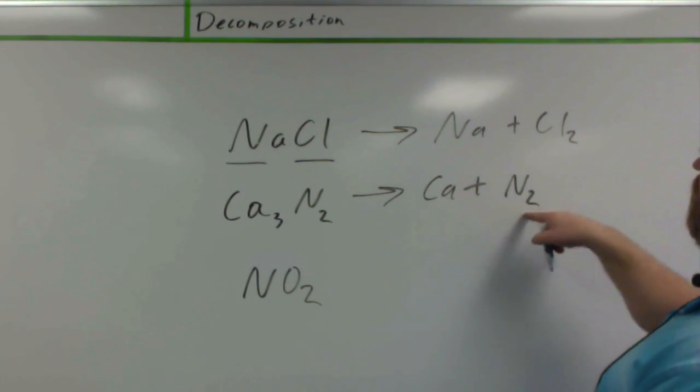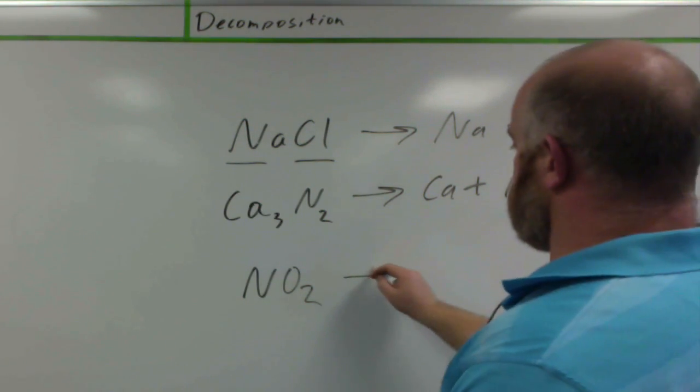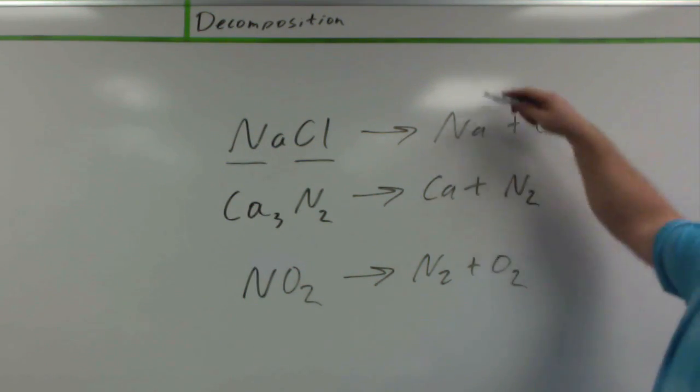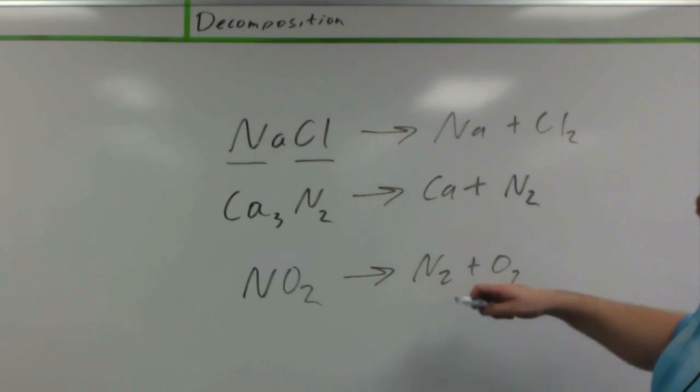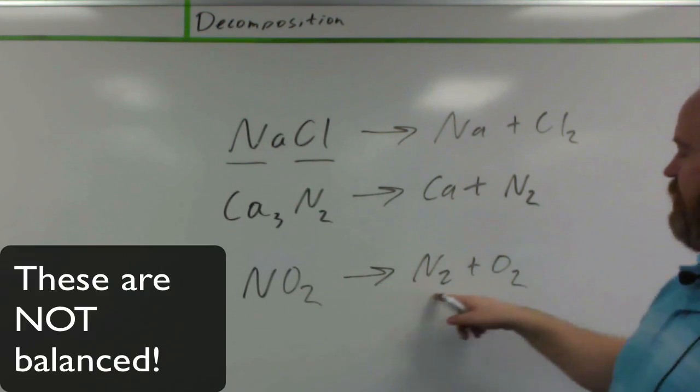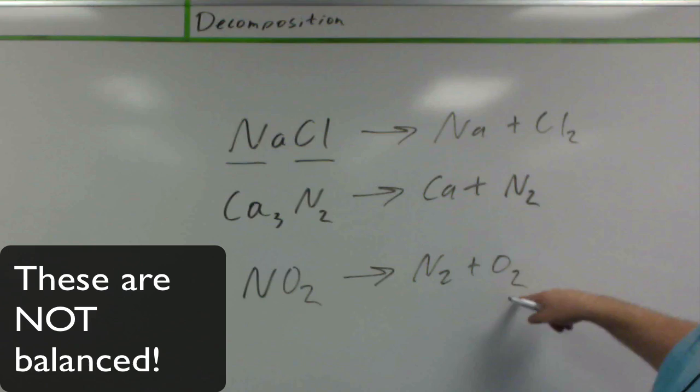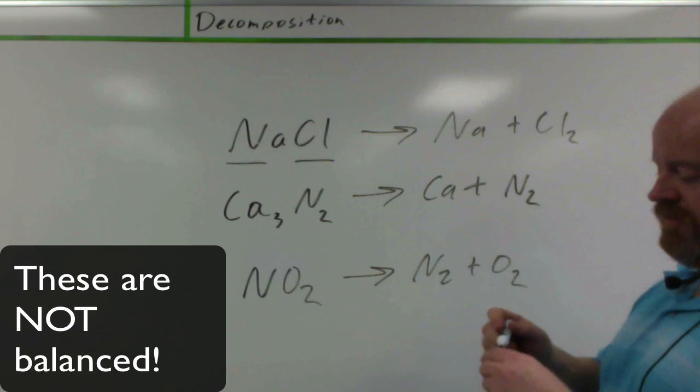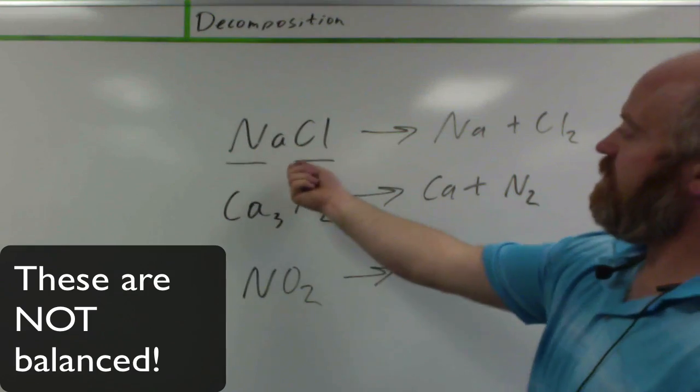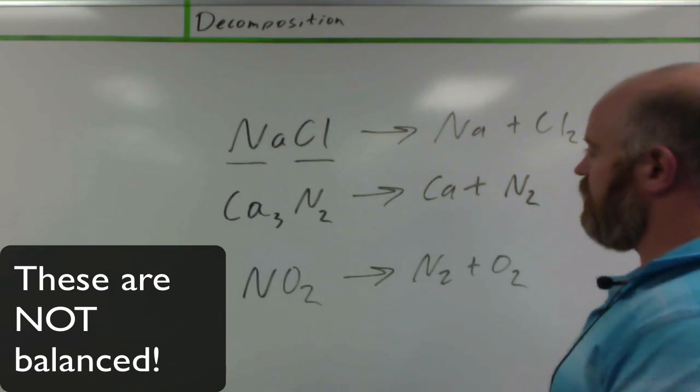And again, we have some diatomics, so I need to put the diatomics in here. And none of these are balanced equations, but you can see where you take a single compound, split it into their individual pieces, making sure to remember our diatomics in these. So for binary ones, they're pretty straightforward, they're pretty easy. Just take what you have, split the two apart in there.